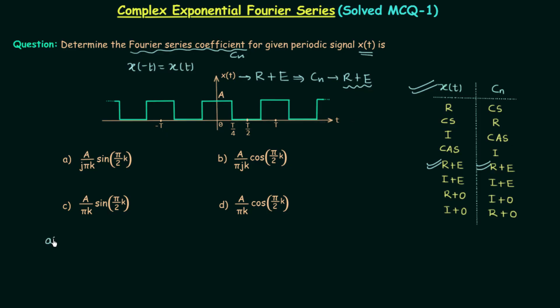Now we will talk about option A. Here in place of N it is using K for the integer, therefore we will use the representation CK. So CK is equal to A over j*pi*K sin(pi/2*K) and you can clearly see we have j here, and as there is j, CK in this case is imaginary. But we needed our coefficient to be real. So option A is the incorrect option because here the coefficient is imaginary.